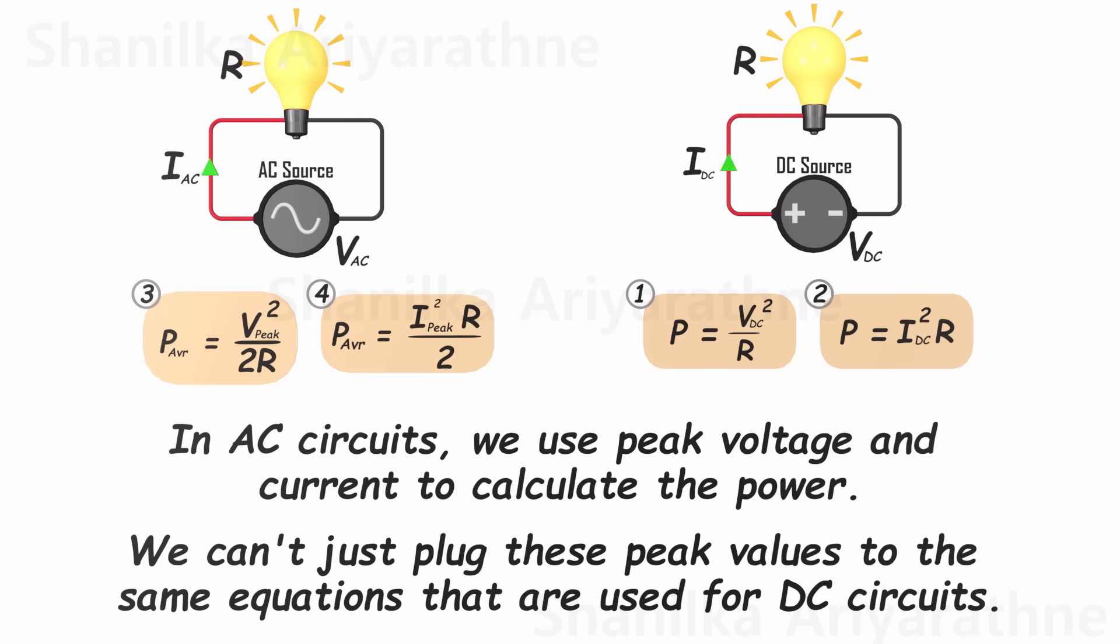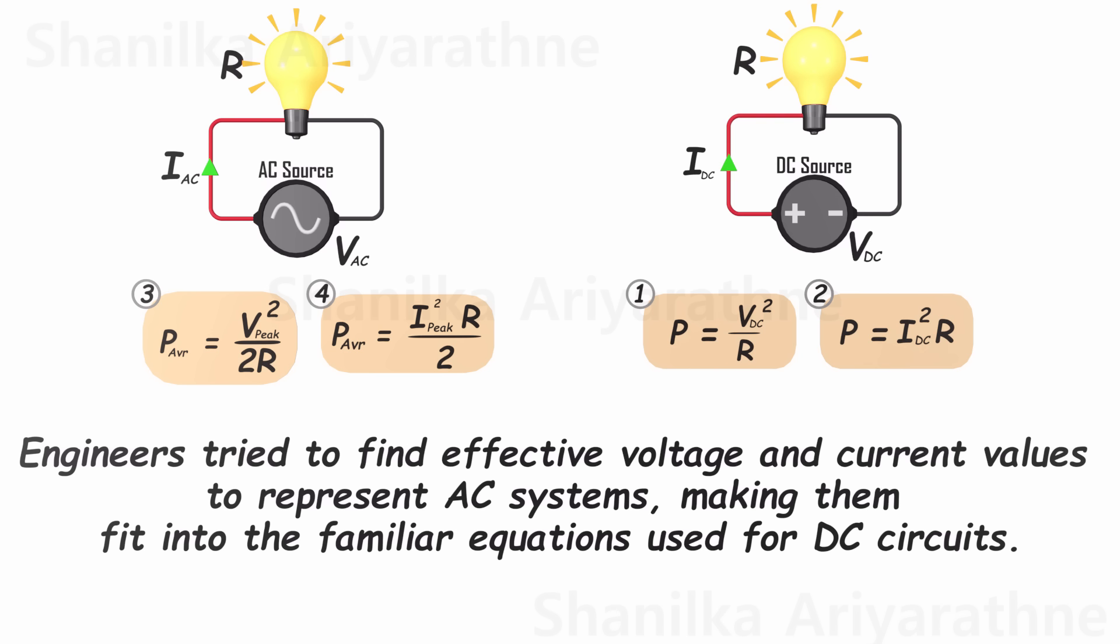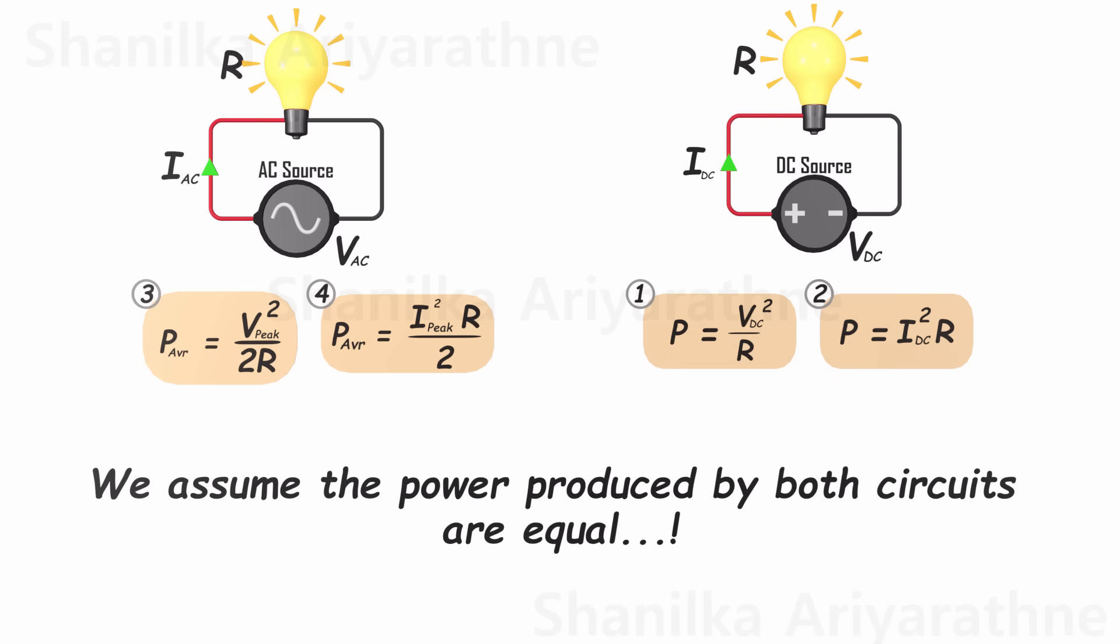This requires additional effort. So, ingenious engineers attempted to define effective voltage and current values to represent AC systems. These values allow us to portray AC systems in a manner that aligns with the same equations used for DC circuits. We're employing a simple trick here. Assuming the resistance in both circuits is the same, we consider the power produced by both circuits to be equal.